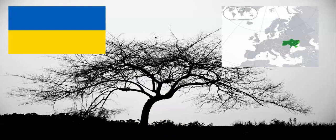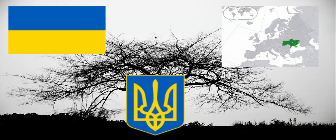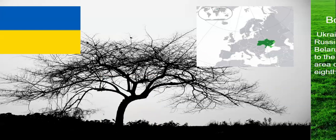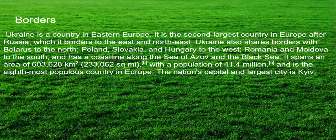There's also this body of water — I couldn't remember the name, but it turns out it's the Black Sea. This is also Ukraine's coat of arms, which is a bit difficult. Ukraine is a country in Eastern Europe, the second largest country in Europe after Russia. It shares borders with Belarus to the north, Poland, Slovakia, and Hungary to the west, Romania and Moldova to the south, and has a coastline along the Sea of Azov and the Black Sea. It spans an area of 603,628 square kilometers, or 233,062 square miles.